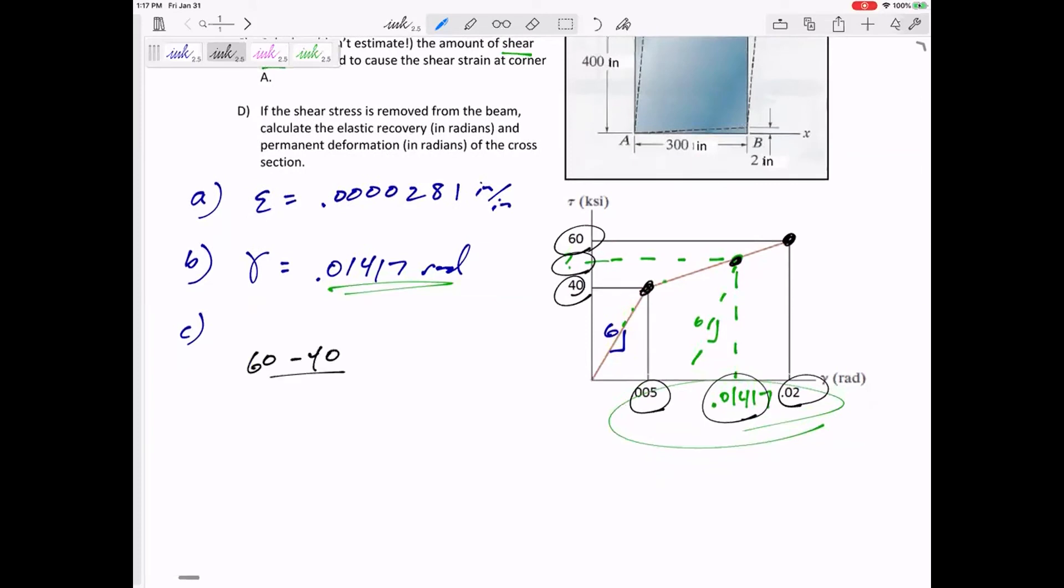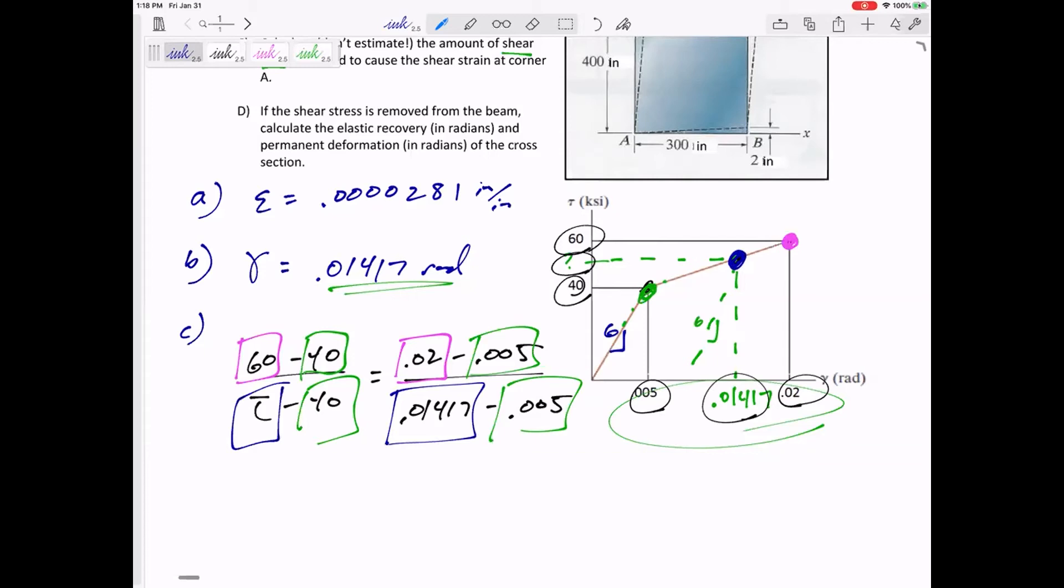Mine would look like 60 minus 40 over tau minus 40 equals 0.02 minus 0.005 over 0.01417 minus 0.005. And so because of fractions, you could flip both of these sides of the equations. As long as you flip both sides of the equations, you'll be fine. Here's the thing though, you need to make sure that that point corresponds with that point. The 60 corresponds with the 0.02. That would be this pink dot right here.